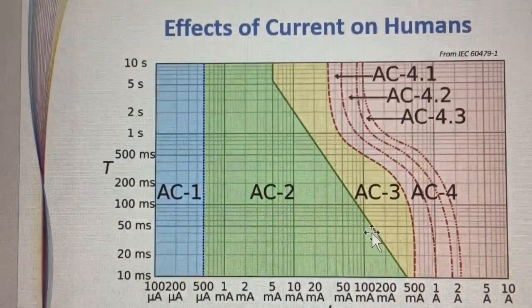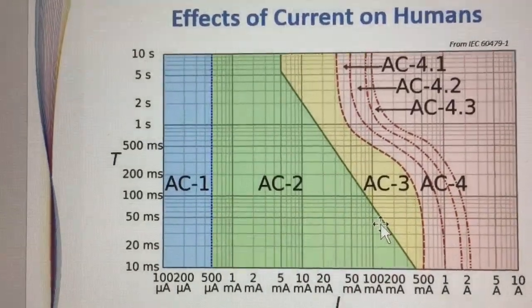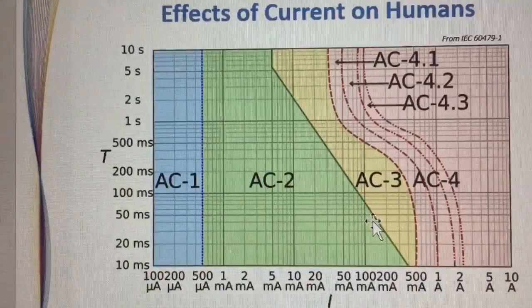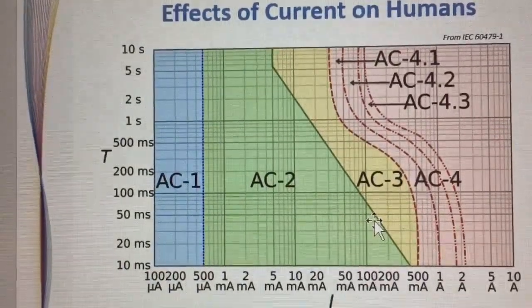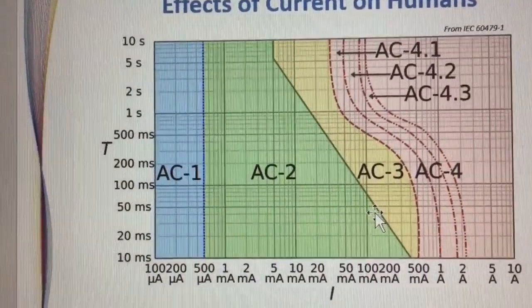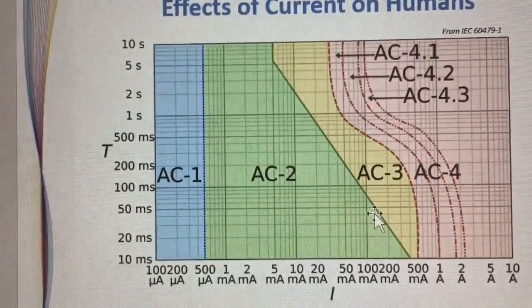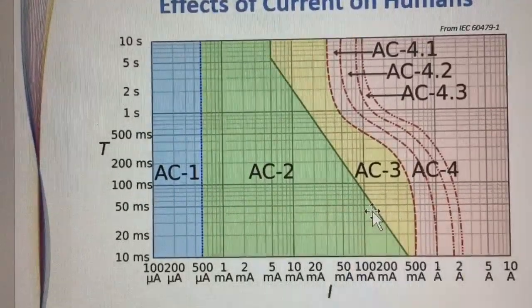If we look at this table of effects of current on humans, on the vertical axis we've got the time in seconds and on the horizontal x-axis we've got the current in milliamps. You can see the different zones there: AC1, AC2, AC3, and then various degrees of AC4.